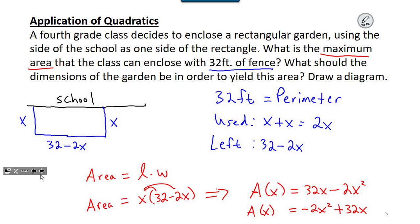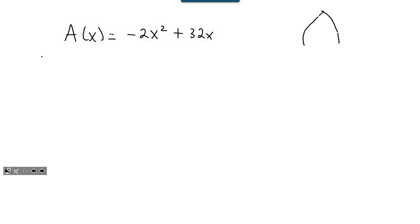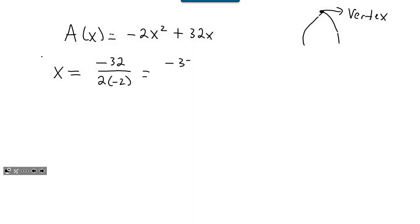Using A of x equal to negative 2x squared plus 32x: since the coefficient of x squared is negative, this parabola opens down, so the maximum is at the vertex. The x value at the vertex is negative b over 2a, which is negative 32 divided by 2 times negative 2, giving negative 32 divided by negative 4, which equals positive 8.